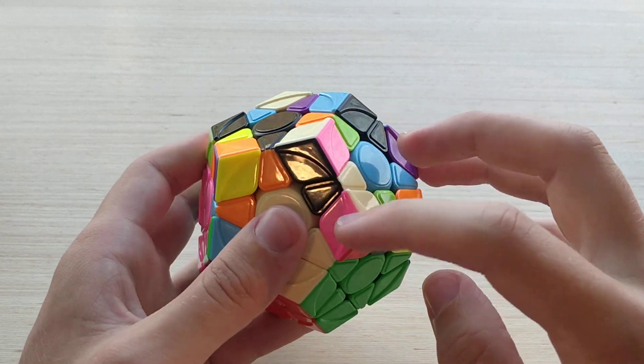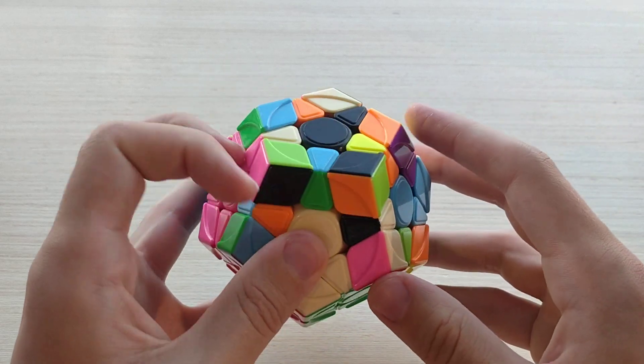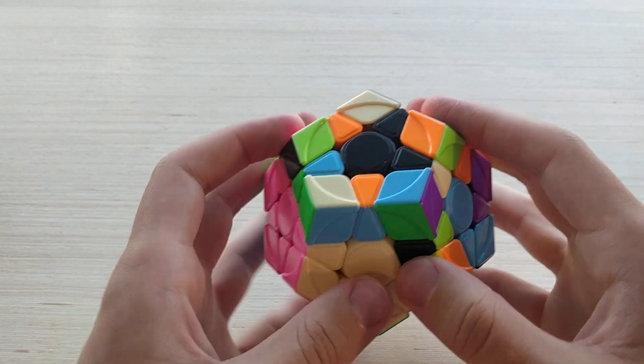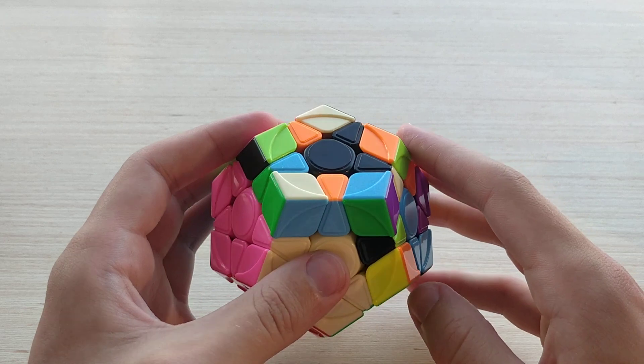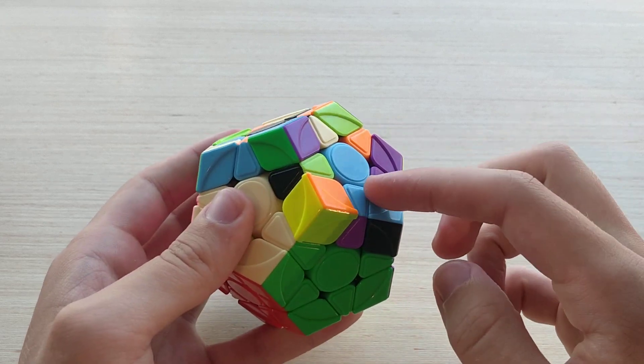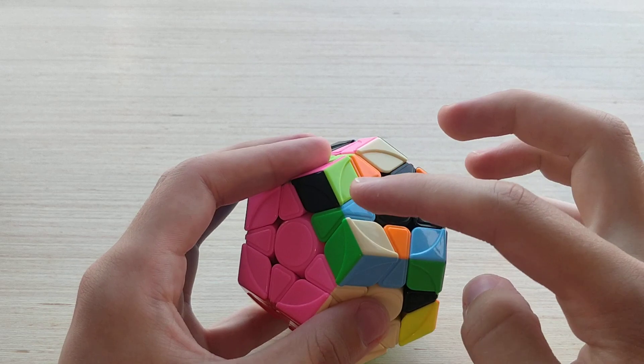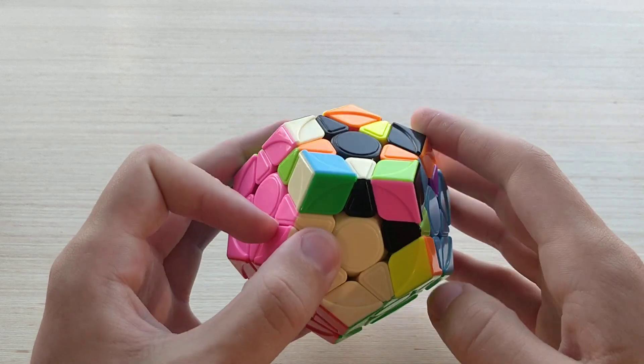Now I see cream-pink: the corner here, the edge here. I'll solve them like that. Now blue-green, so the purple edge is down here. This piece, this one, and this one. Pair them up and insert.